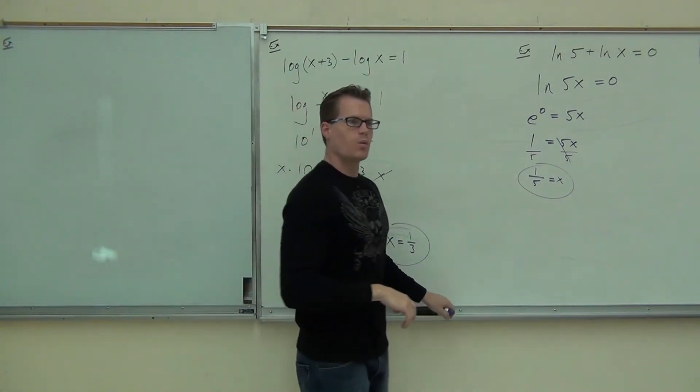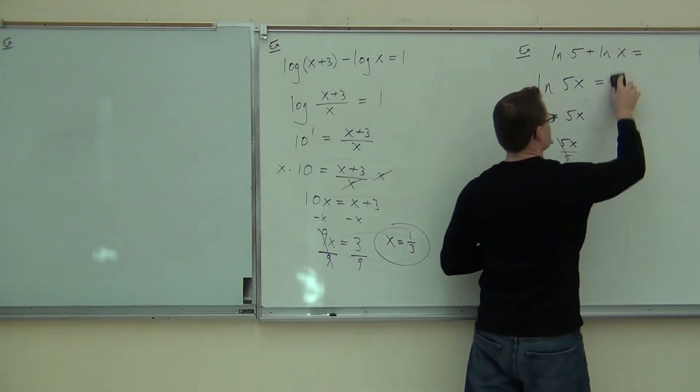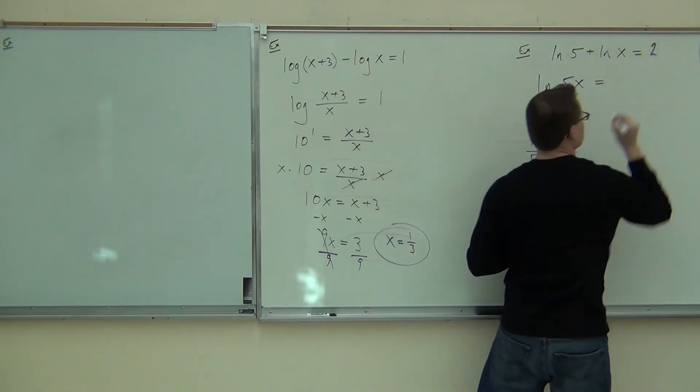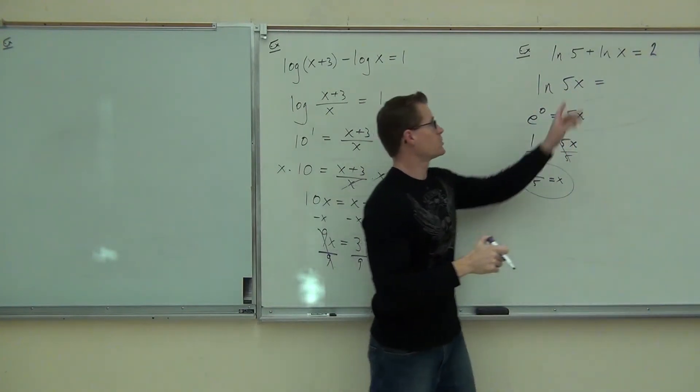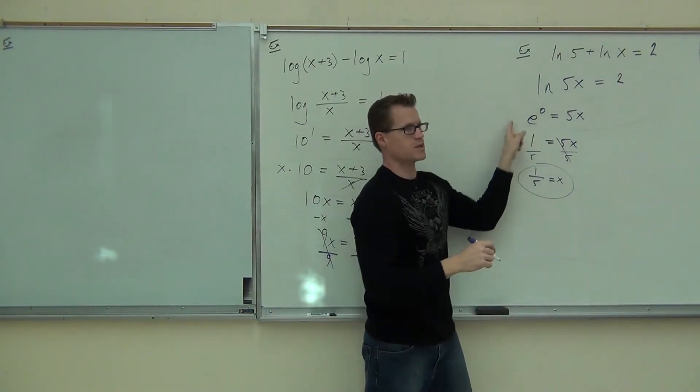One more thing I want to show you with this problem. What if this is not a zero? What if this is like a two? If that's a two, would you still do the same thing here? And then you'd have a two here. What would this become?